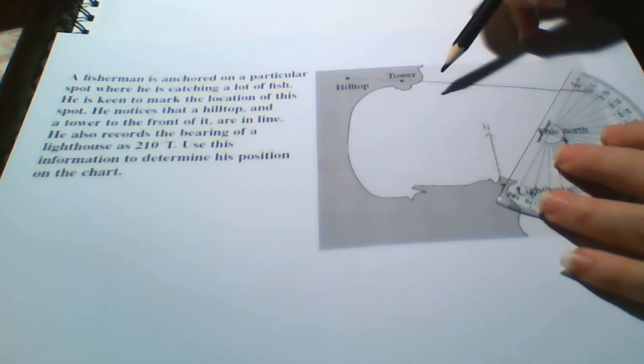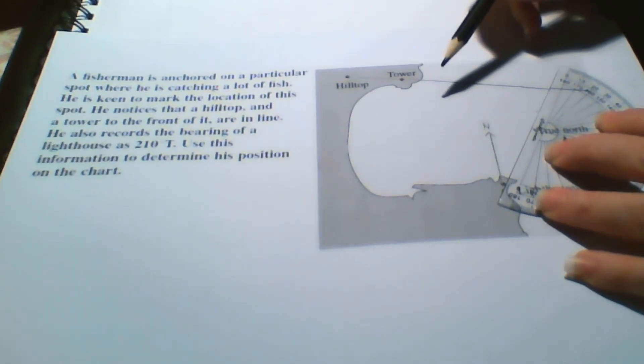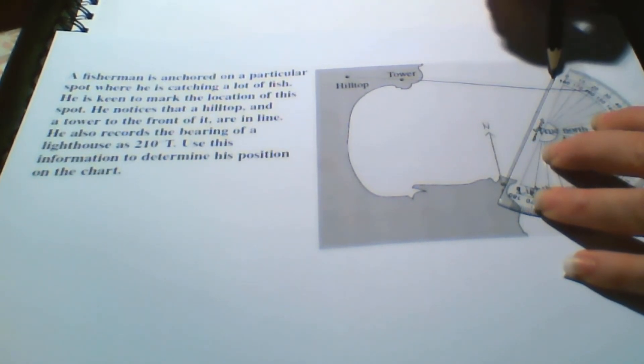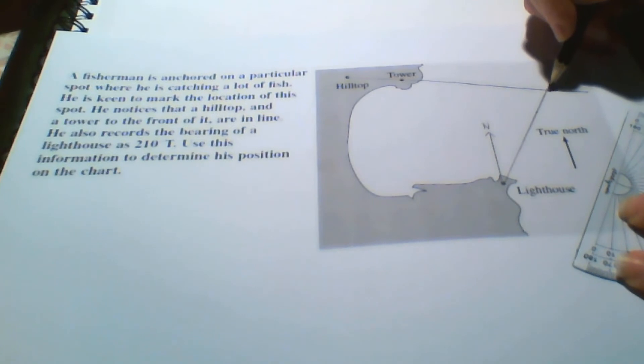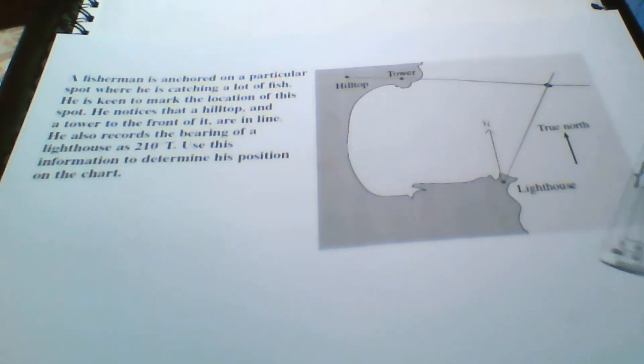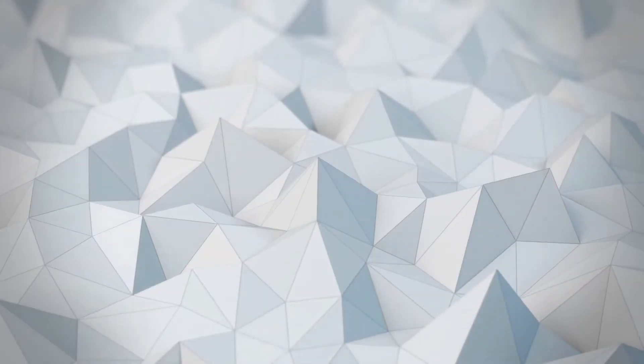So we've done that, we just need to line up those two points and extend out until we see the other line. And where the two lines meet is where the boat is. It's in line with the hilltop and tower and on a bearing of 210 degrees true.